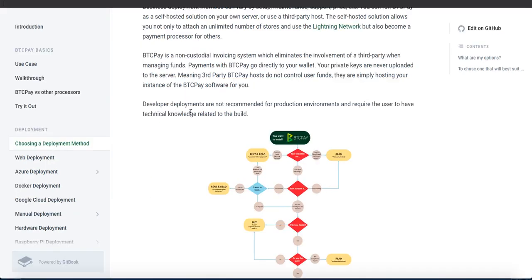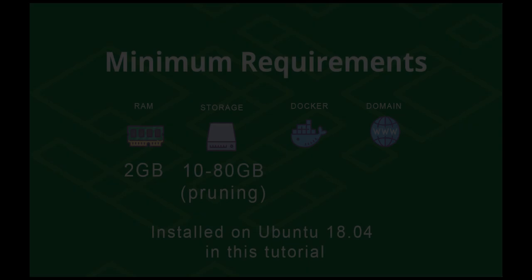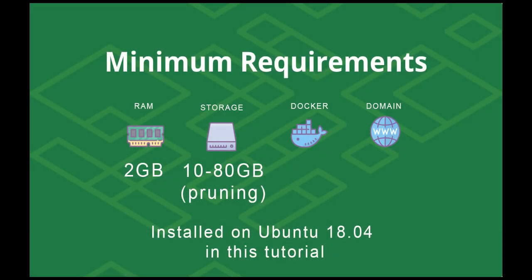This tutorial will be generic and valid for any virtual private server provider which meets the minimum requirements: at least 2 gigabytes of RAM and at least 10 gigabytes of storage, though optimal would be 80 gigabytes. I'll be using 2 gigabytes of RAM and 80 gigs of SSD storage. You can use HDD, but SSD is highly recommended because it provides way better performance. Your VPS also needs to have Docker support, and since we want the server accessible on the web, we'll need a domain name.